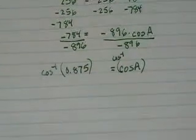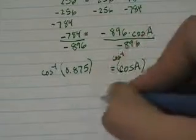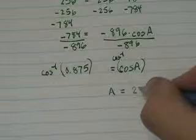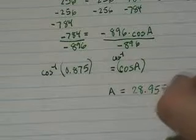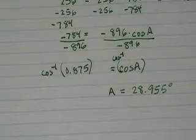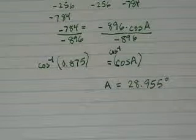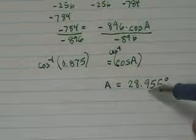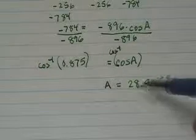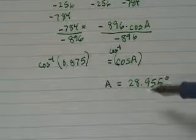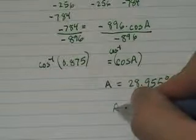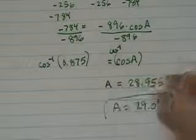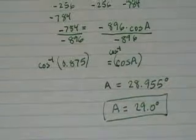And the inverse cosine of .875 will give me a equals 28.955 degrees. And the original problem said to the nearest tenth. So if I say 28.9 and then the next one over is a 5, I'm going to round that up. Well, 28.9 rounded up is going to be 29.0 degrees. And that's the answer for angle A.